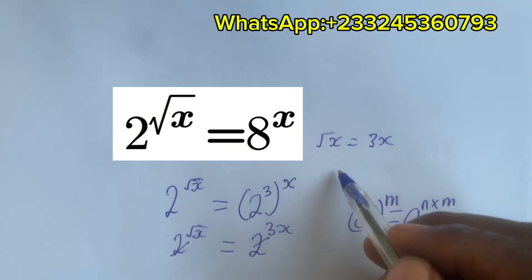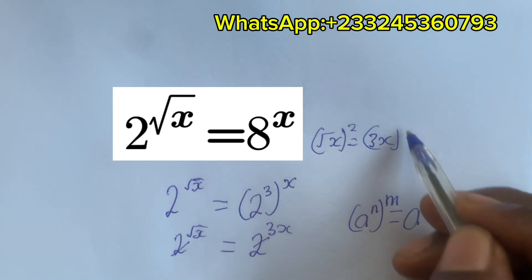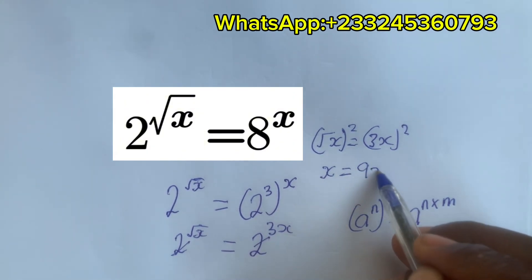Now how do we find x? We're going to square both sides to remove the square root, right? So we square here and we square here. So we're going to have x equals 9x².